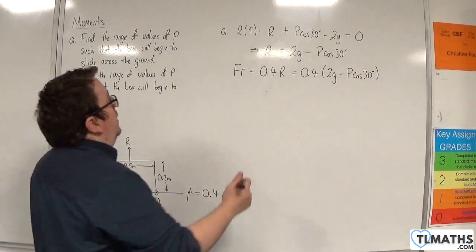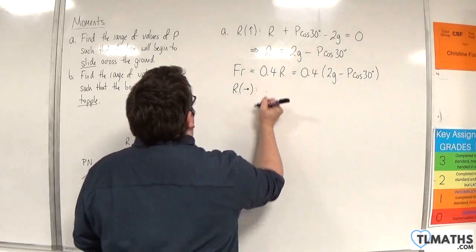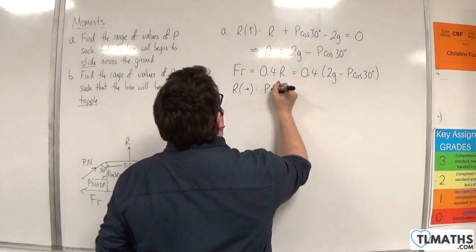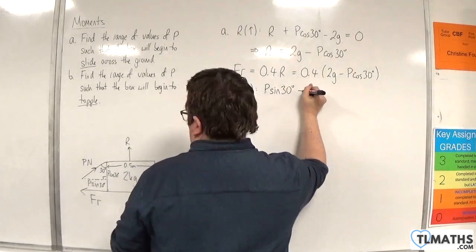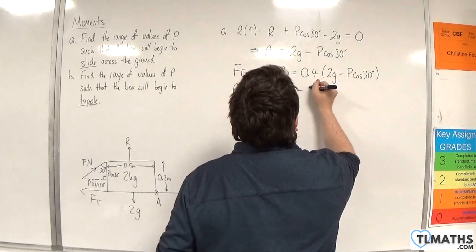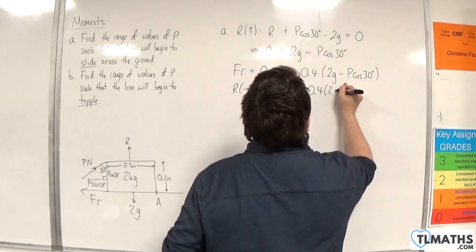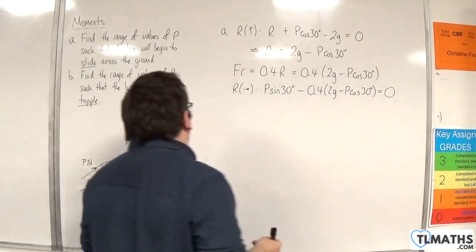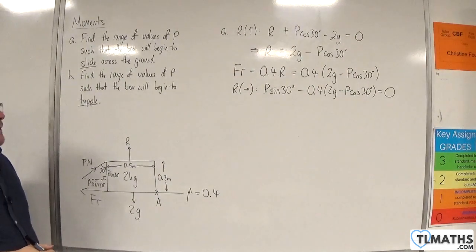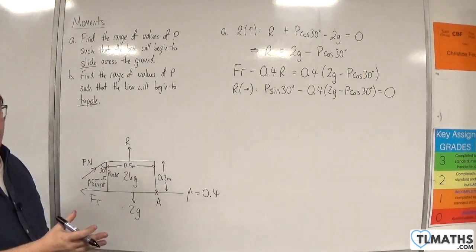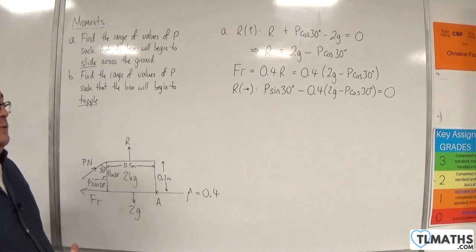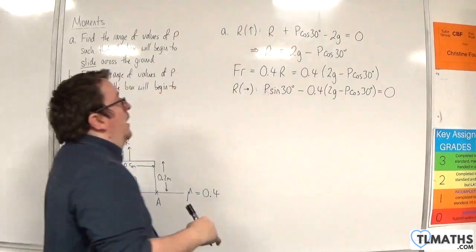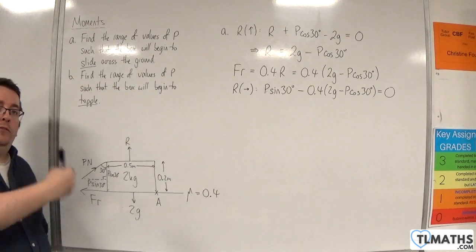Now I'm going to resolve horizontally, taking to the right as positive. So I've got P sine 30, then take away the friction, which is 0.4 times (2G minus P cosine 30), and I need this equal to 0. Once I've figured out what P is from that, P has to be greater than that value.